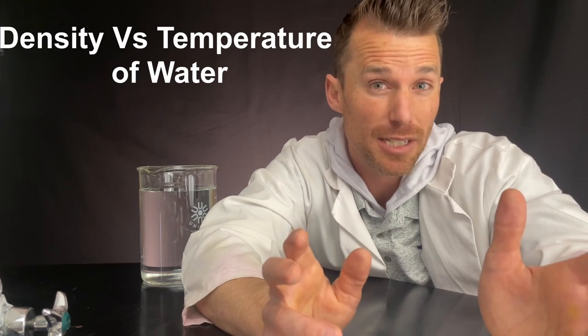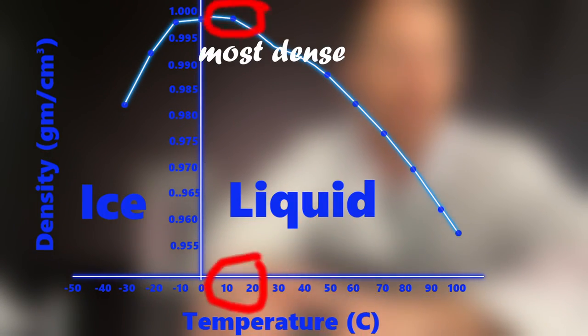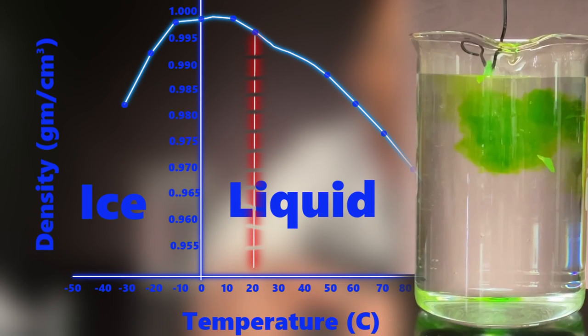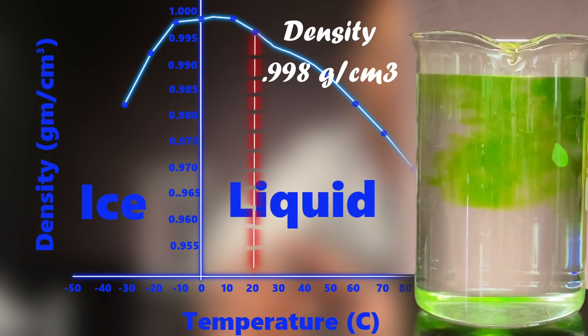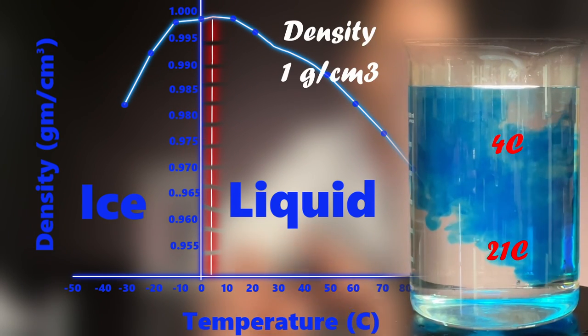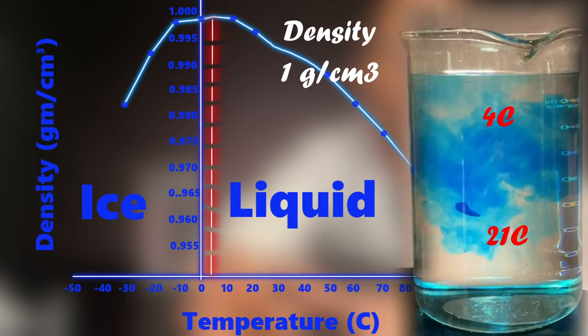The density curve of water is really interesting and looks like this. Water is most dense from around the 0 to 20 degrees Celsius mark, with a max density of 1 gram per centimeter cubed at about 4 degrees Celsius. The water in the beaker should have a density of around 0.998 since it's about 21 degrees Celsius. While the cold water should be closer to the 4 degrees Celsius mark with a density of 1. This means the cold water is slightly more dense and sinks.